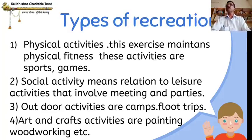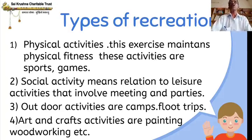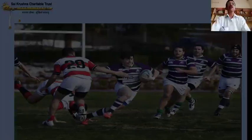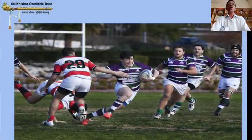All of you understand? There are four types of Recreation. This is the picture of Outdoor Activities — this is one of the examples of Recreation.